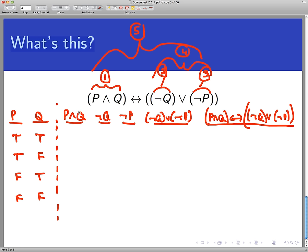We know that P and Q is going to be true whenever both P and Q, literally and Q, are true, and that only happens here. All the other places, one of those two statements, possibly both, is false.